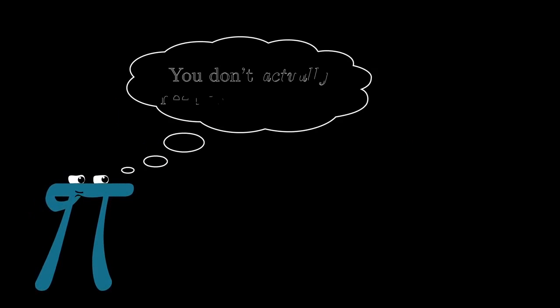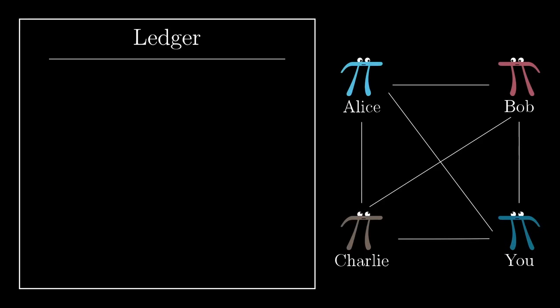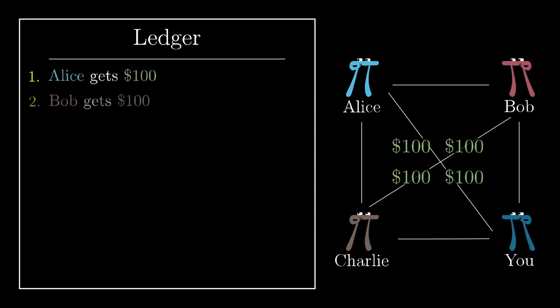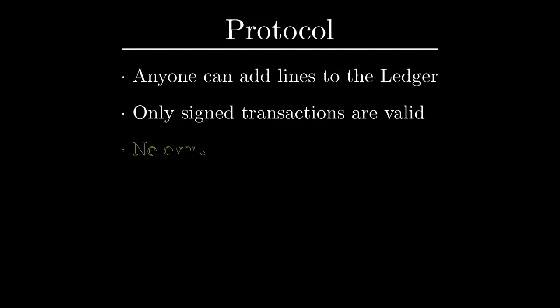So maybe you have the clever idea that you never actually have to settle up in cash as long as you have some way to prevent people from spending too much more than they take in. Maybe what you do is start by having everyone pay $100 into the pot and then have the first few lines of the ledger read, Alice gets $100, Bob gets $100, Charlie gets $100, etc.